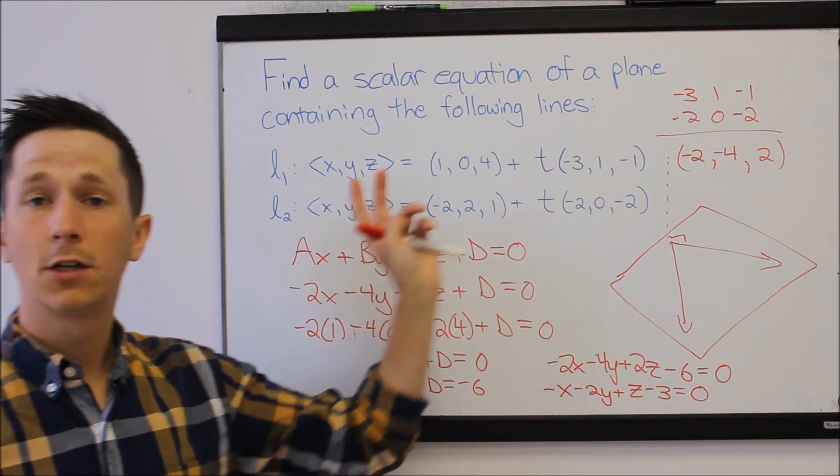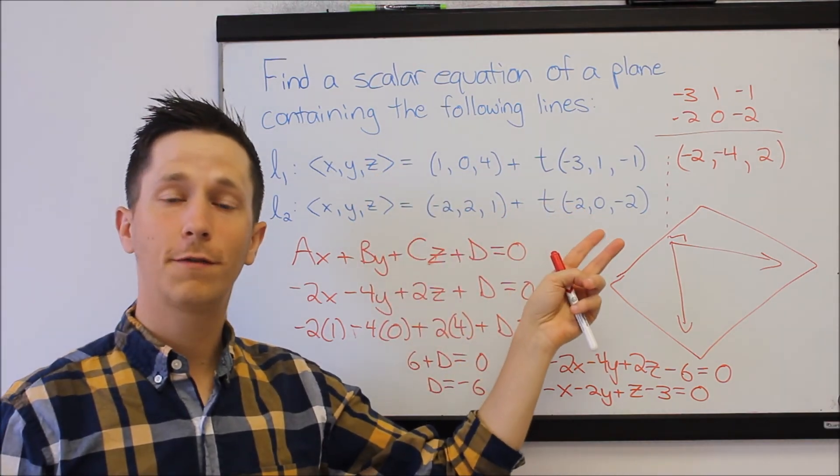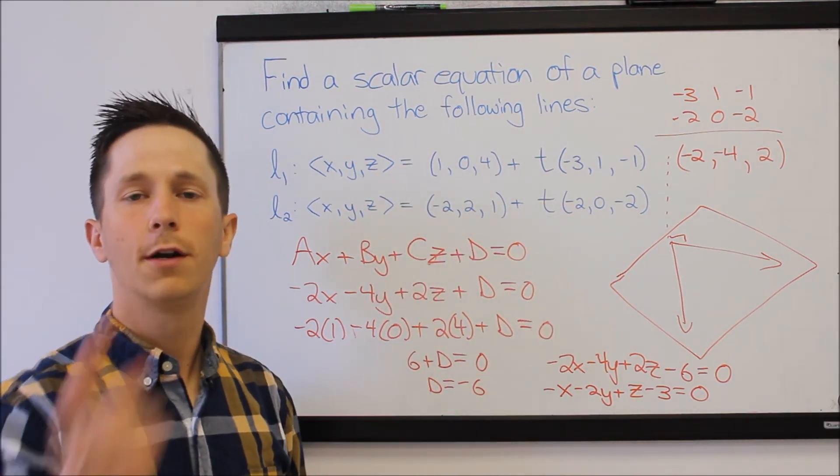Again, if it contains the two lines, just do the cross product of their direction vectors. That gives you the normal vector and plug in one of the points to solve for D.